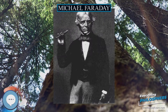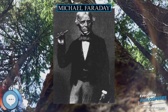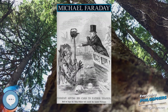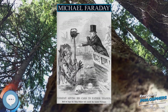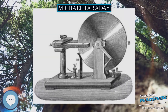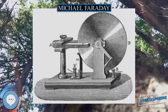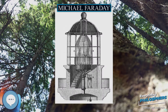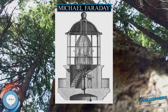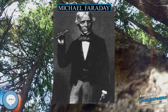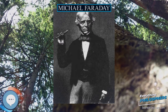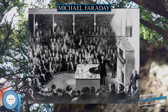He was elected a foreign member of the Royal Swedish Academy of Sciences in 1838, and was one of eight foreign members elected to the French Academy of Sciences in 1844. In 1849 he was elected as associated member to the Royal Institute of the Netherlands, which two years later became the Royal Netherlands Academy of Arts and Sciences, and he was subsequently made foreign member.